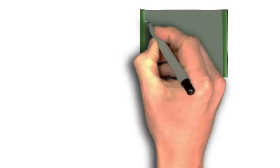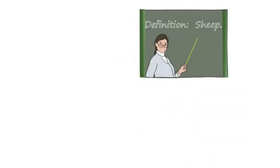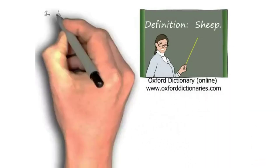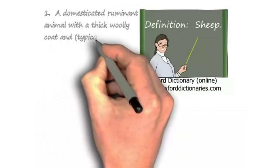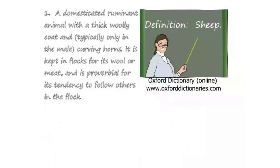What is a sheep? One is the one that we would all guess: a domesticated ruminant animal with a thick woolly coat, curving horns. It is kept in flocks for its wool or meat, and it's proverbial for its tendency to follow others in the flock.